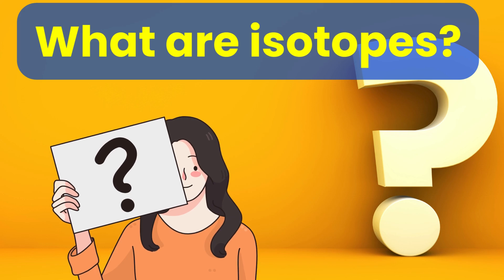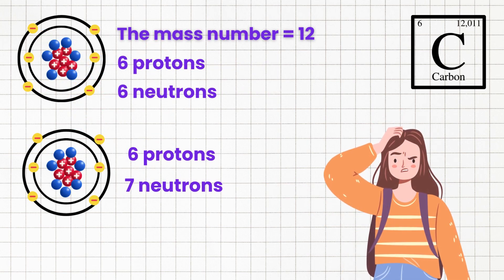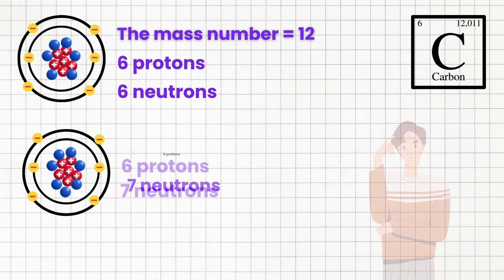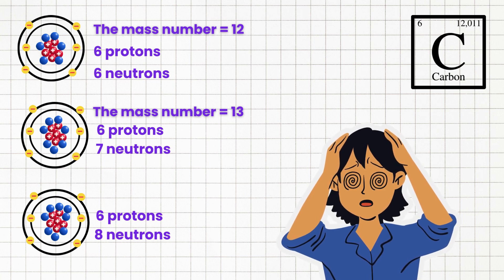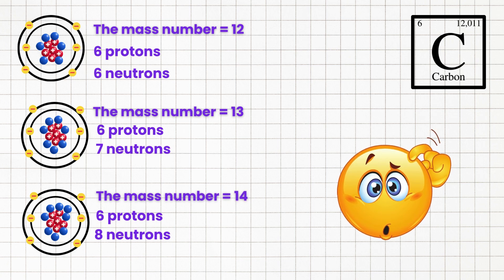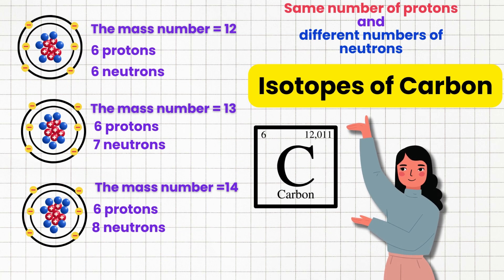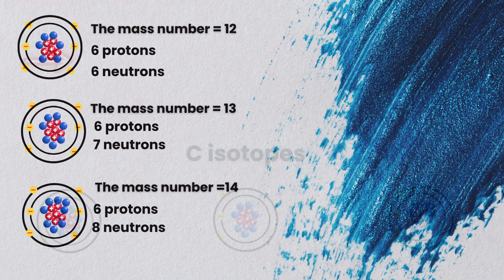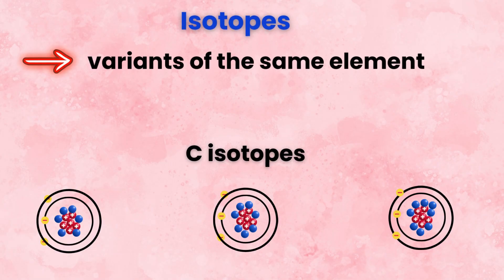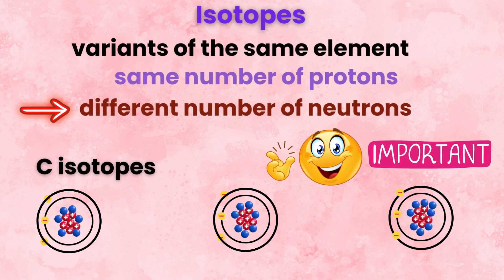Now let us understand what isotopes are. Here is the carbon atom we just looked at with six protons and six neutrons with mass number 12. Here is another carbon atom — it has six protons and seven neutrons, so mass number is 13. Here is yet another carbon atom — it has six protons and eight neutrons, so mass number is 14. These three carbon atoms have the same number of protons and different numbers of neutrons. These are the three naturally occurring isotopes of carbon. Isotopes are variants of the same element since they have the same number of protons but different number of neutrons. They are all carbon atoms.